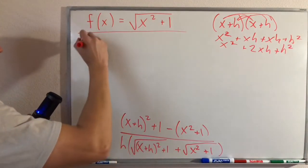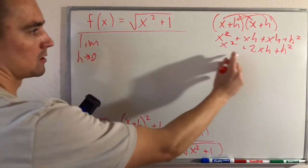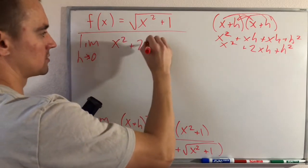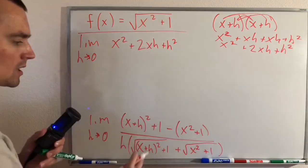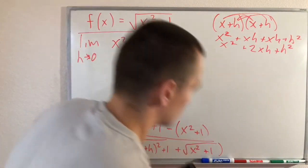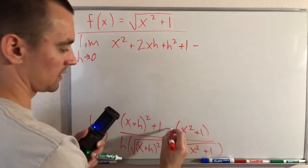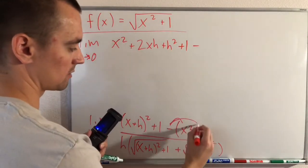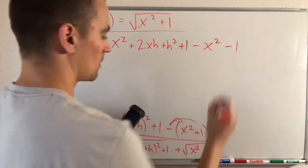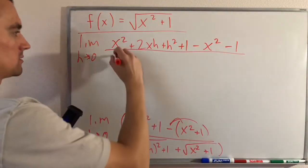Foiling (x+h)² gives x² + 2xh + h². So our numerator becomes the limit as h→0 of: x² + 2xh + h² + 1, then distributing the negative gives us − x² − 1. Our denominator we'll leave as h times the conjugate for now.